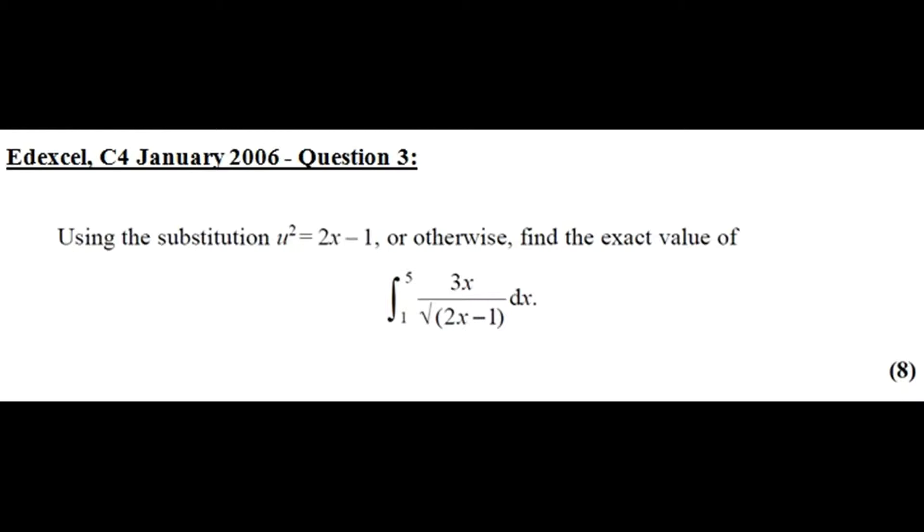Question number 3. Using the substitution u squared equals 2x minus 1 or otherwise, find the exact value of the integral between limits 1 and 5, 3x over the square root of 2x minus 1 with respect to x. So, let's see how this is done. Let's go to the paper and pen.